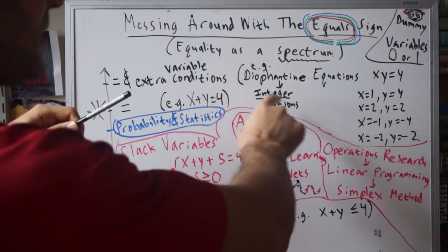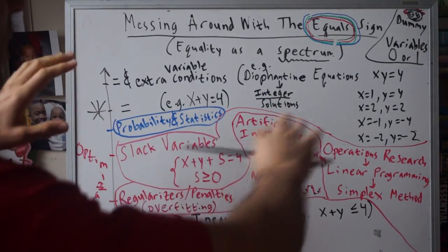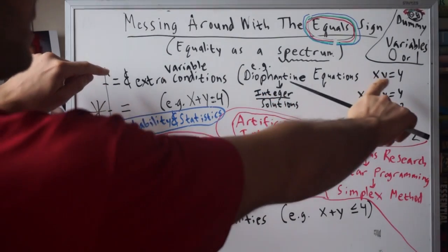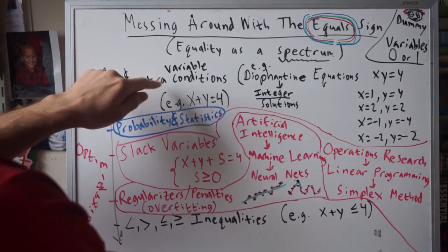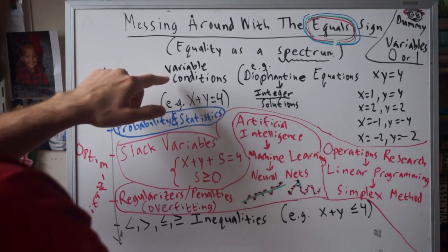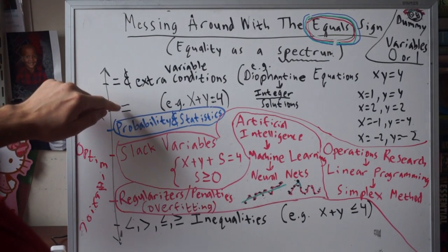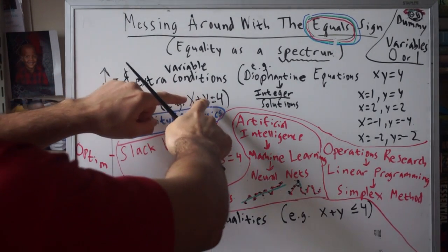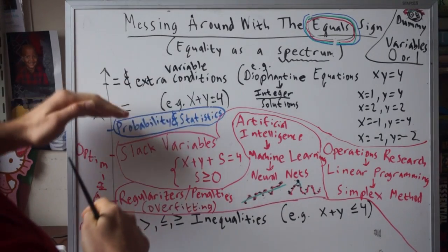Diophantine equations just means that the solutions can only be integers. We've taken an equality but we're adding extra conditions to the variables. We don't just want any x and y, we only want certain x and y. That's stricter than regular equality where you could pick any x and y you want.